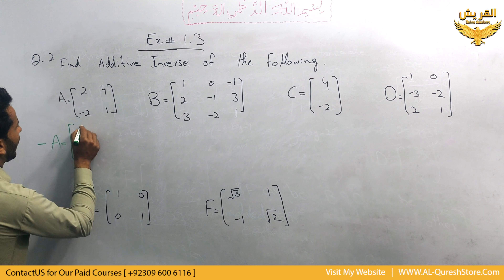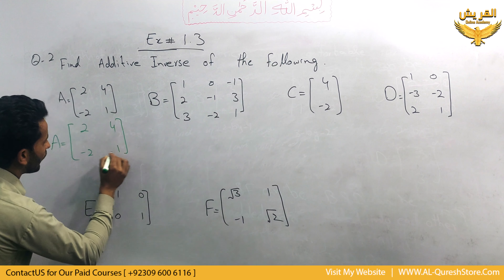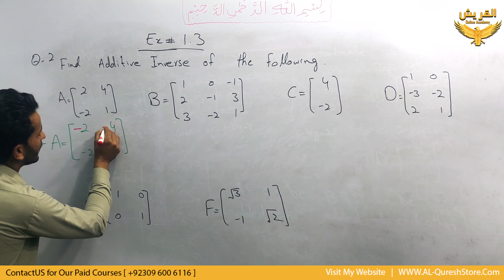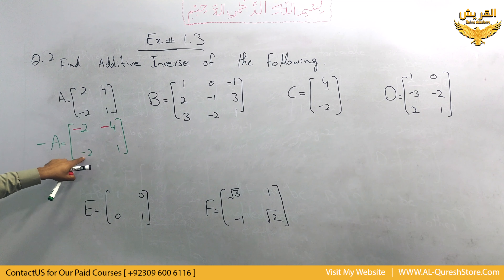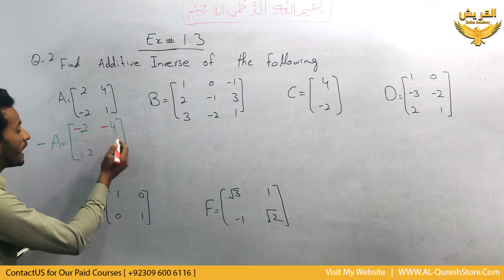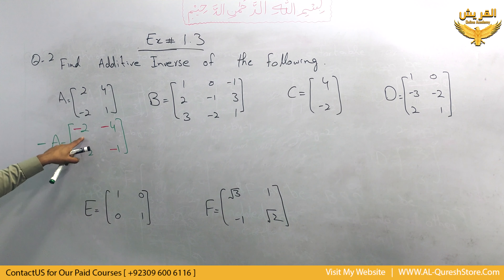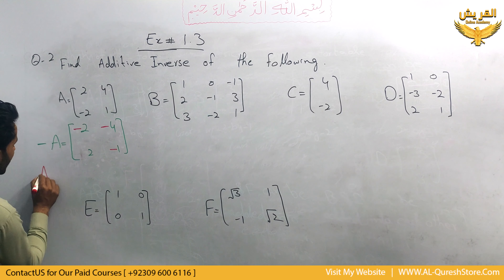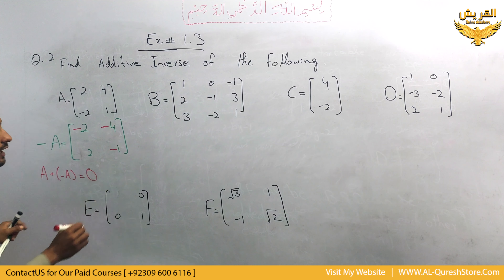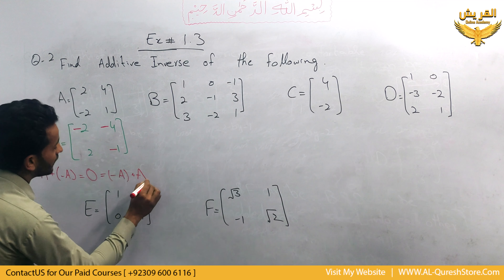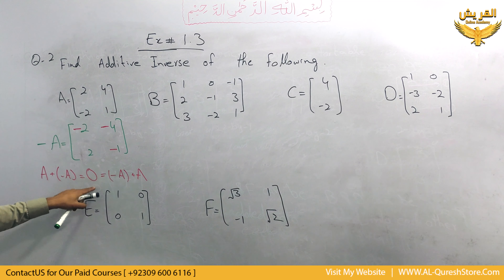First we write matrix a. To find its additive inverse, we change the sign of each element of matrix a. For 2 we use minus 2, for minus 4 it already has a minus sign so we use plus 4, and for minus 1 we use plus 1. So matrix minus a becomes minus 2, plus 4, plus 2, and minus 1, which is the additive inverse of matrix a. We can verify: a plus minus a equals the null matrix, which is the additive identity.